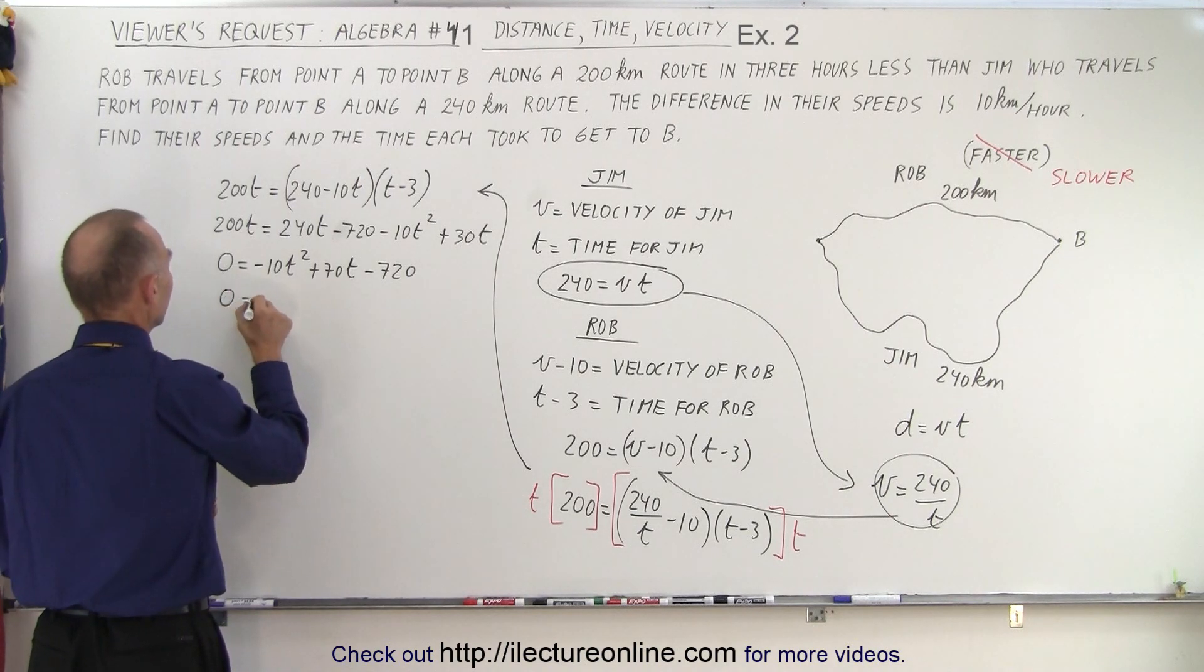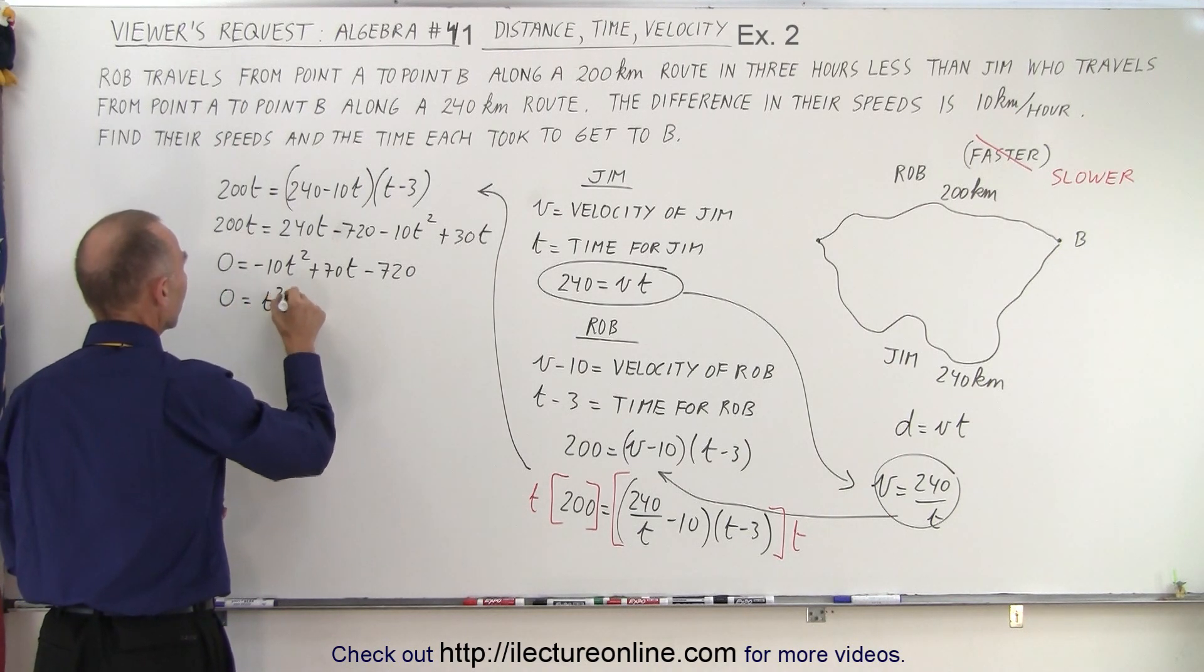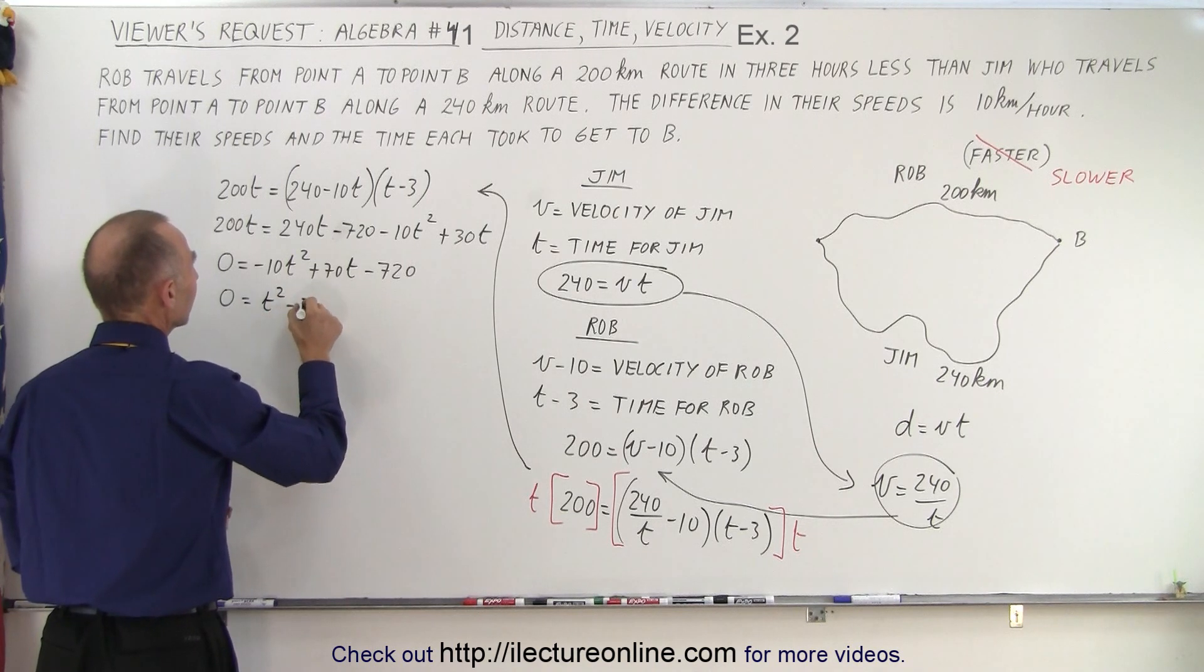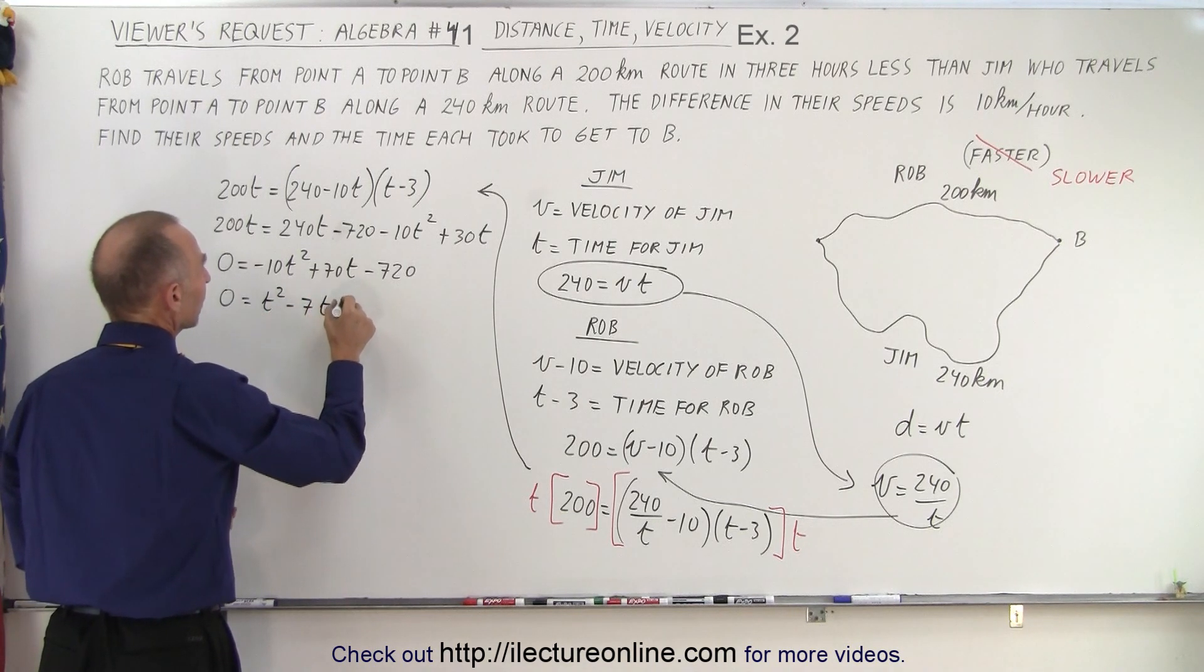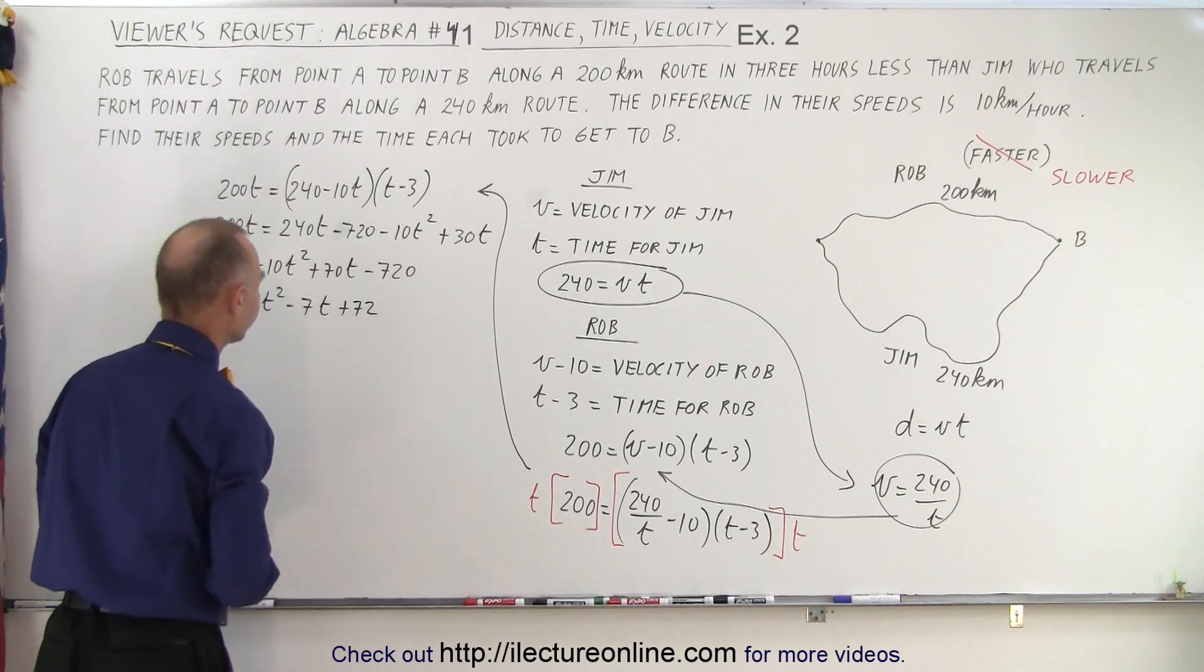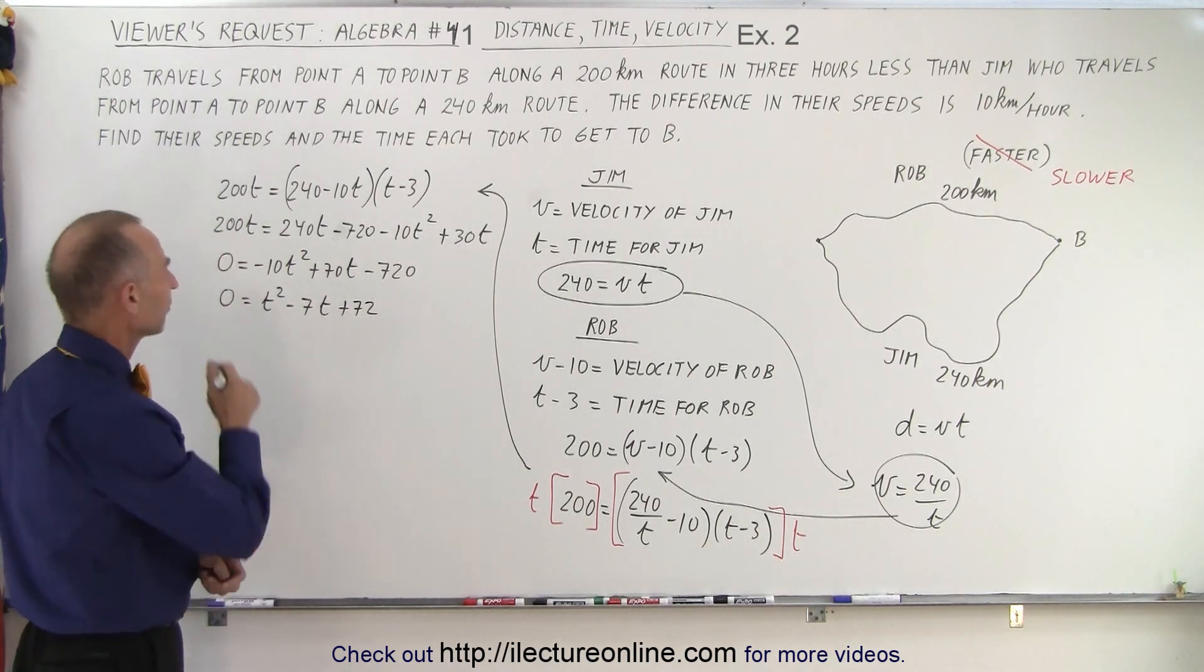And I can divide everything by 10 and multiply everything by negative one because I don't like a negative in front here. So we end up with zero is equal to a positive T squared, minus 7T, and plus 72.